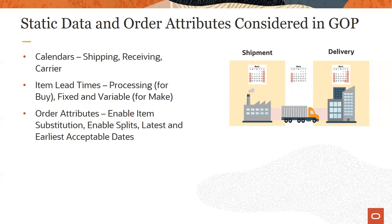The order promising solution respects different calendars including shipping calendars, receiving calendars, carrier calendars, supplier calendars, production calendars, and so on. It also respects different types of item attribute lead times depending on the type of item being promised. For purchased items it takes into consideration pre-processing lead time, processing lead time, and post-processing lead time, whereas for manufactured items it takes into consideration fixed and variable lead times. It also considers order attributes such as enablement of splits and substitutions, as well as the earliest and latest acceptable dates, which determine the time window within which the order can potentially be promised.